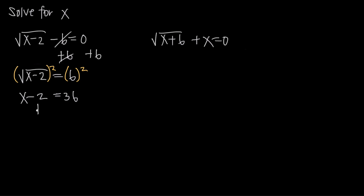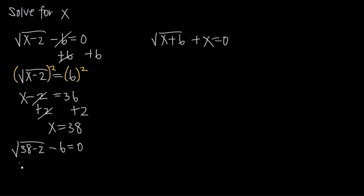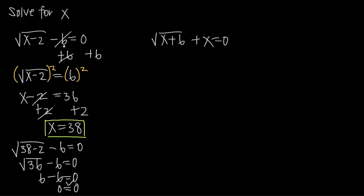To solve for x, we add 2 to both sides. The negative 2 and positive 2 cancel on the left, leaving us with x equals 38. This is our potential solution, but we must plug it back into the original equation to verify. Substituting x = 38, we get the square root of 36 minus 6 equals 0, which gives 6 minus 6 equals 0, or 0 equals 0. That checks out, so x equals 38 is a valid solution.